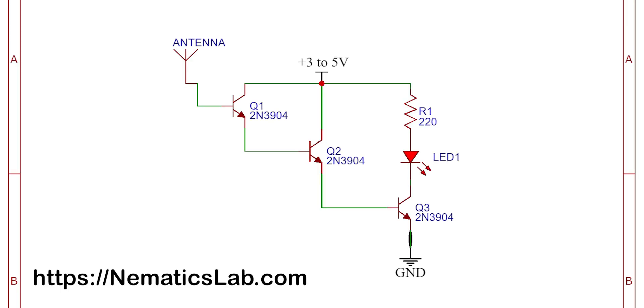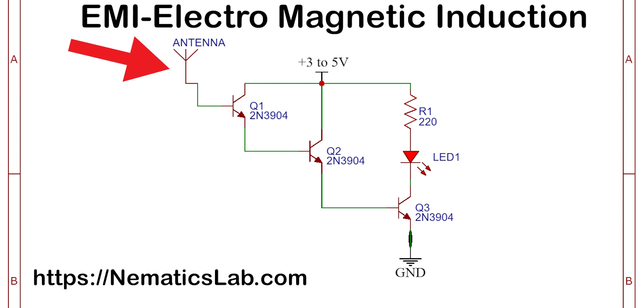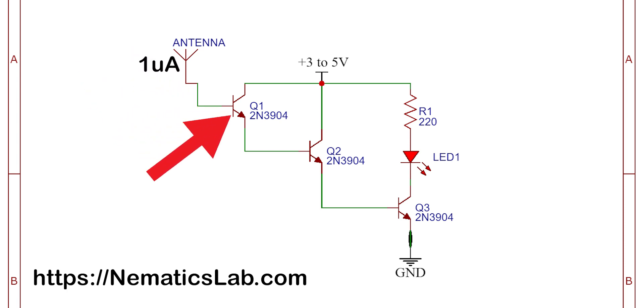But how does this circuit work? Well, the antenna is connected to the base of first transistor and we all know transistors are used for amplification purpose. So when the live wire is detected by the antenna due to electromagnetic induction, it induces a very small current into the antenna, let's say it's 1 microampere.